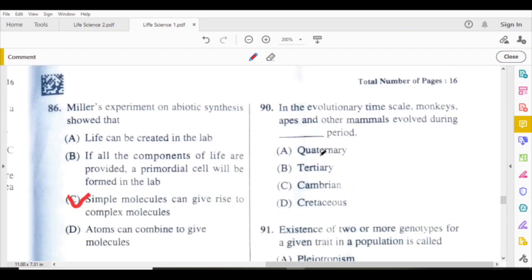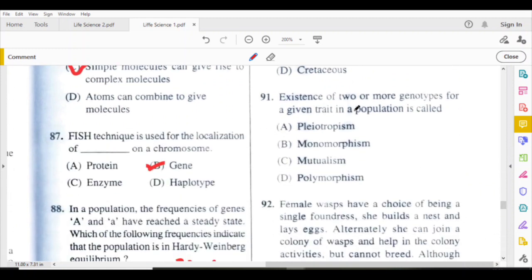In the evolutionary time scale, monkeys, apes and other mammals evolved during tertiary period. Existence of two or more genotypes for a given trait in a population is called polymorphism.